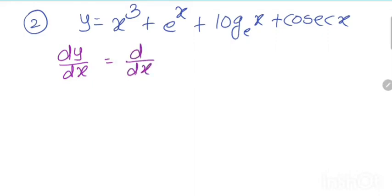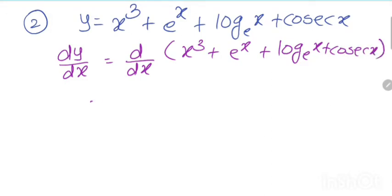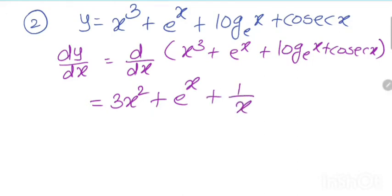Here we put the value first: x cube plus e raise to x plus log e x plus cos x. The derivative of x cube is 3x square. The derivative of e raise to x is e raise to x. The derivative of log x is 1 by x. And the derivative of cosec x is minus cosec x into cot x. So this is our answer.